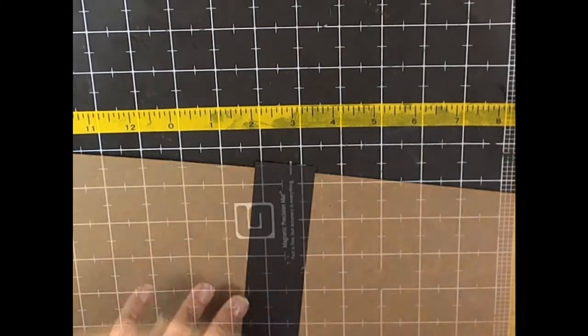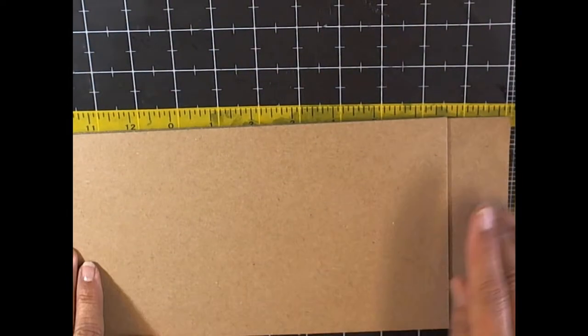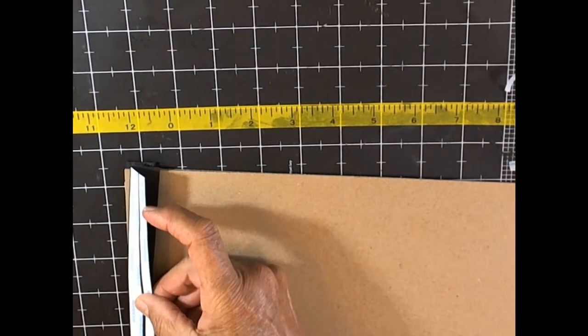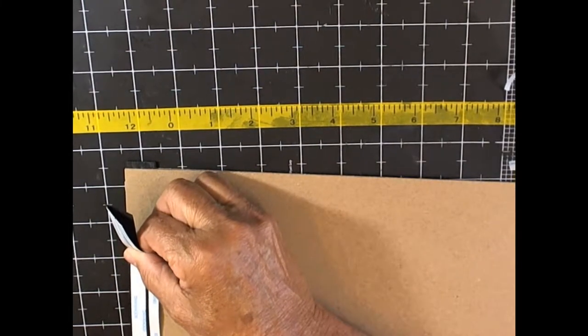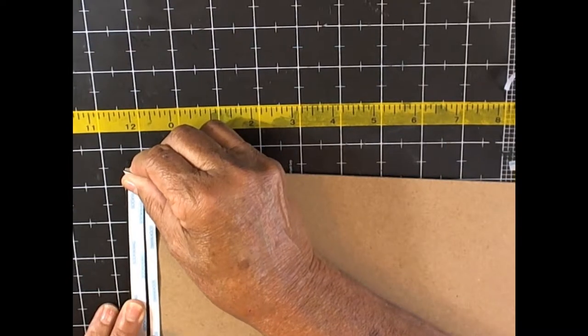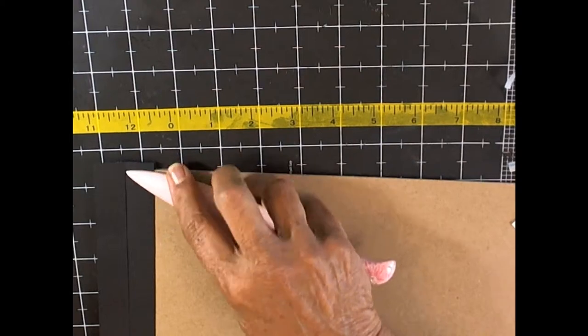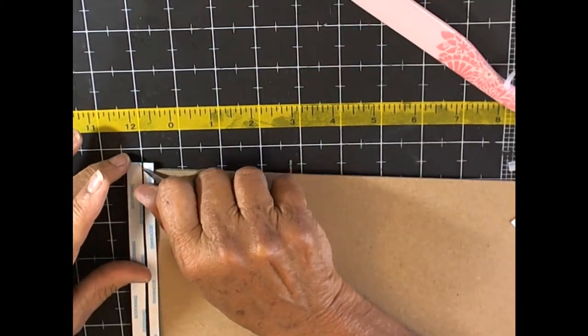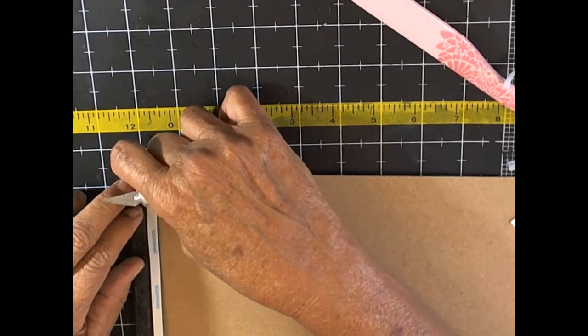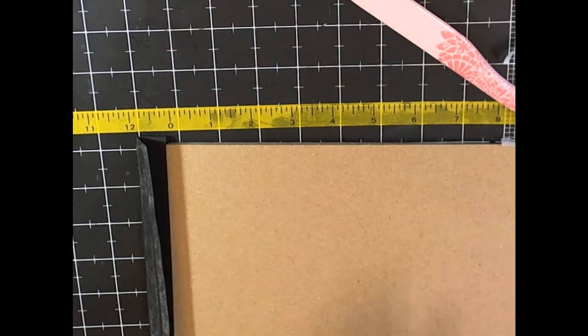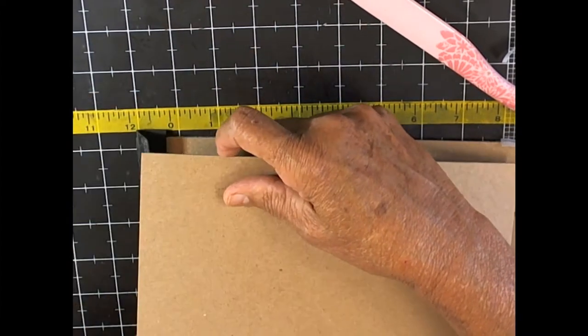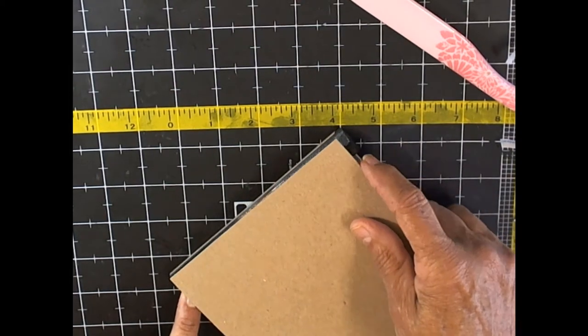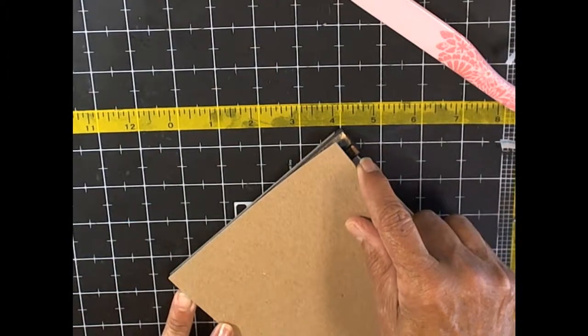Now we're on to page four and you're going to repeat the process. Peel your score tape off of the back and attach it down carefully. Burnish it well and then peel it off of your top and you're going to apply page three to the top of that score tape, to the top of that hinge. You want to line it up again carefully.